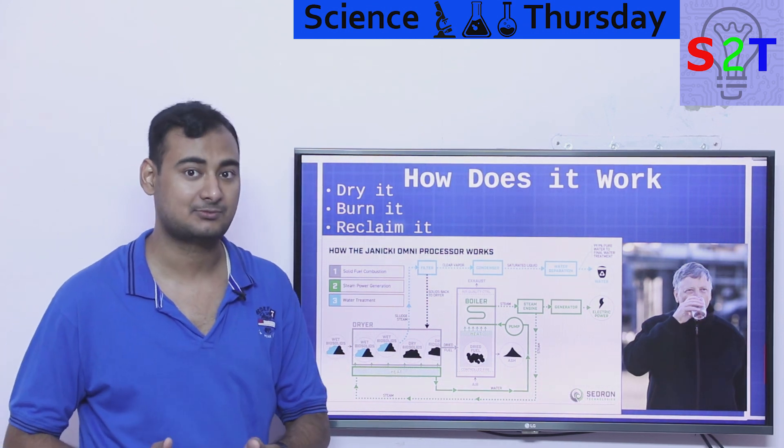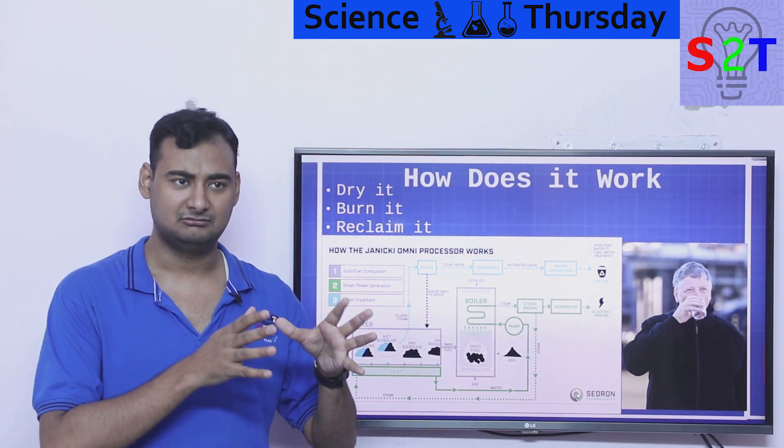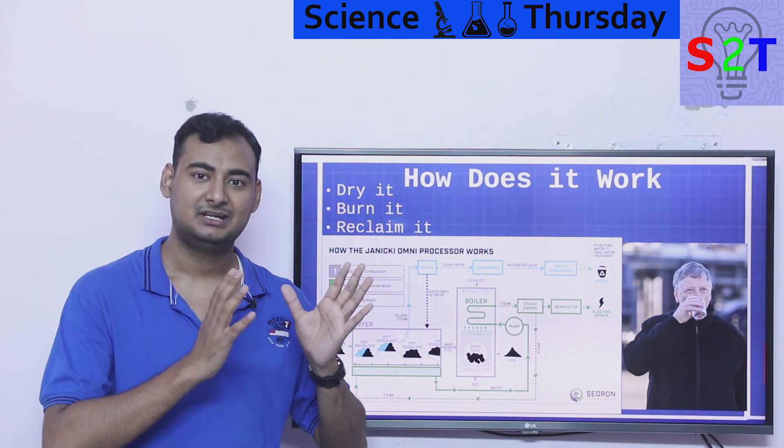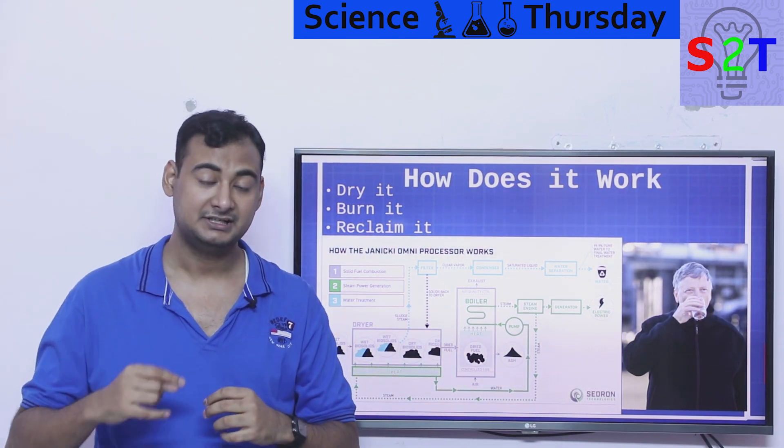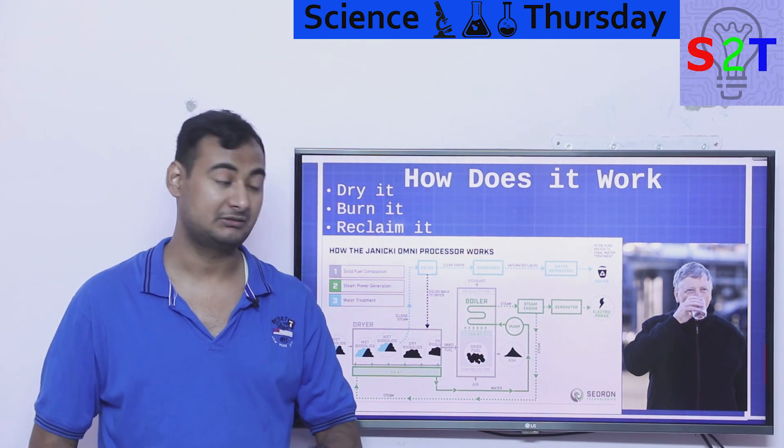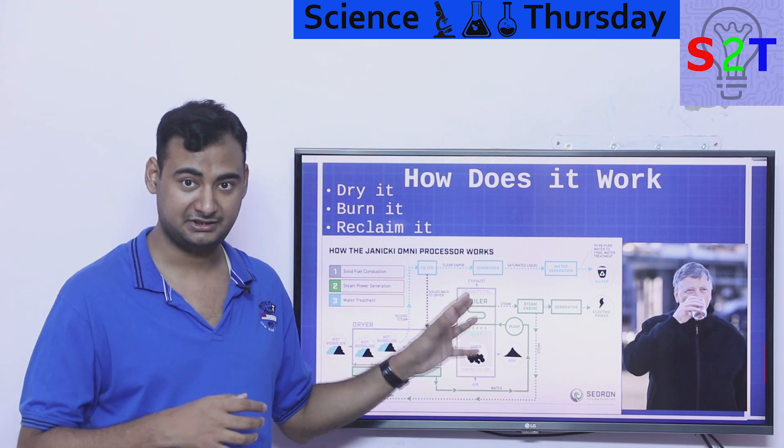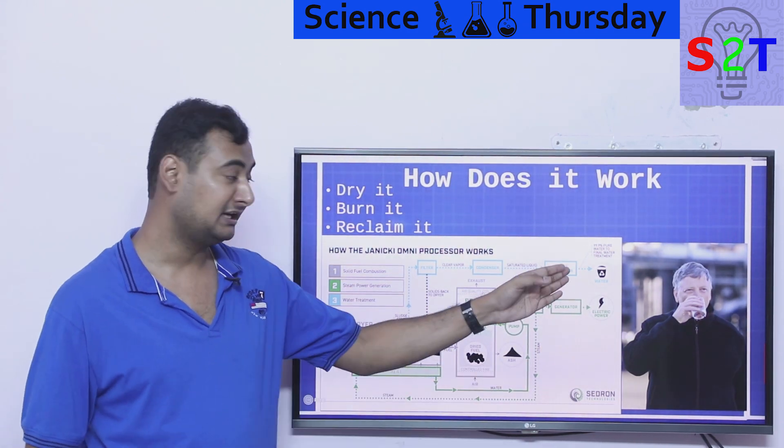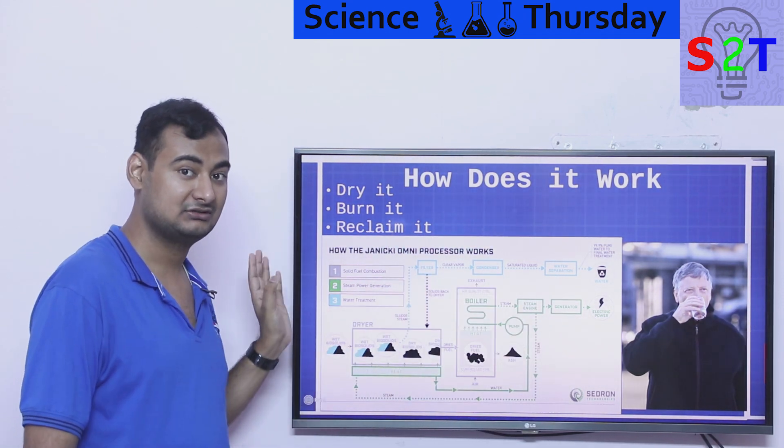That ash is not a very high value product but still a valuable product. In modern construction we've learned that making bricks out of fly ash - ash that comes from coal power plants - is much better. It's much lighter and much more durable. They tested this, so you're getting three sources of revenue: one low source ash, one high source water, one medium source electricity. All of this because of fecal matter.